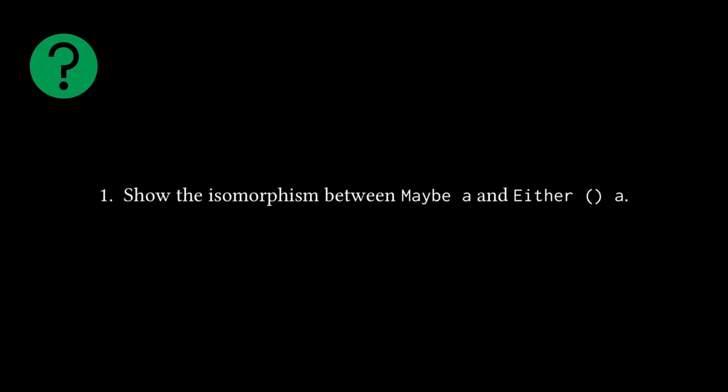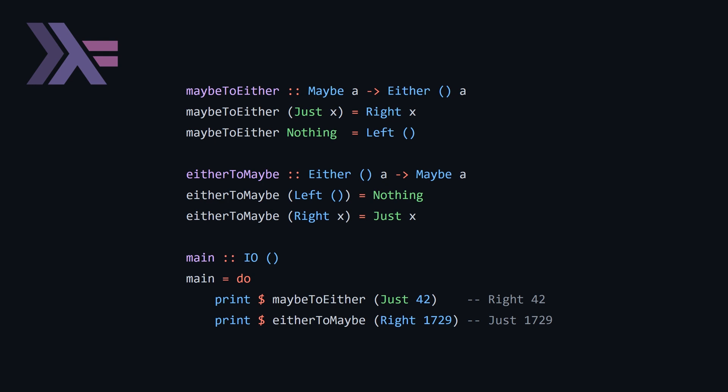And with that, we'll hop into the exercises of which we're going to cover, I believe, three out of the five, technically three and a half. So the first one asks, number one, show the isomorphism between Maybe A and Either unit A. So all we need to do to show that these two are isomorphic is to basically implement two conversion functions to show that there's no information lost. So here is that implementation. We're using Haskell because either and maybe are from the Haskell language, although you could have re-implemented these and then shown the isomorphism in your language of choice.